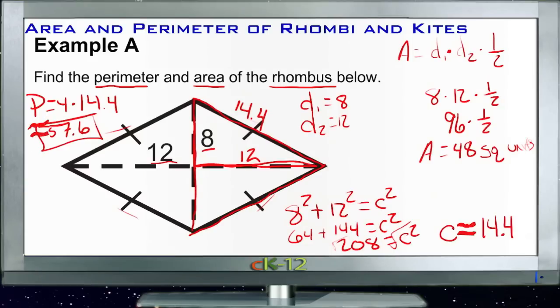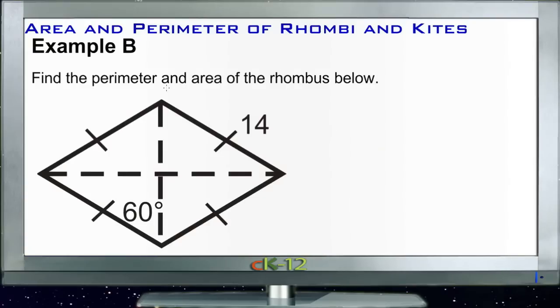I need to start learning to use these approximately equal to signs instead of having to draw over my equal sign every time. 57.6 units around the outside, that's our perimeter. In example A, it was easy to find the area because we already had our vertical and horizontal diagonals, and it was a little trickier to find the perimeter.